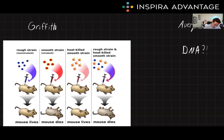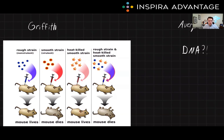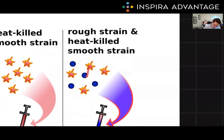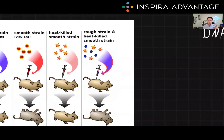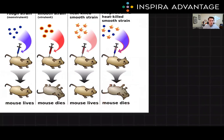Looking at this diagram, we see a rough strain that is not virulent and won't kill the mouse — injecting it leaves the mouse alive. The smooth strain is virulent, so injecting it kills the mouse. Griffith used heat to kill the smooth strain; when injected alone, the mouse lives. However, when the heat-killed smooth strain is mixed with the rough strain, genes move from the lysed smooth bacteria into the live rough strain, giving it virulence and allowing the mouse to be infected and die.